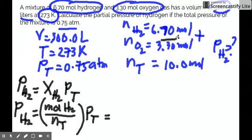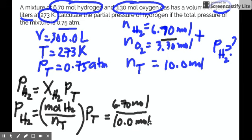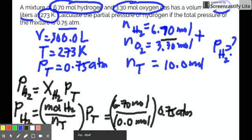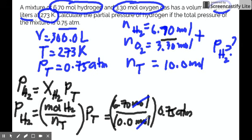So we can already substitute it here. You know mole H2, which is 6.70 mole. And you know the total mole, we already added it, which is 10.0 mole times the total pressure of 0.75 atmosphere. And of course, you know that if it's a mole fraction, there's no unit because you can just cancel it out.